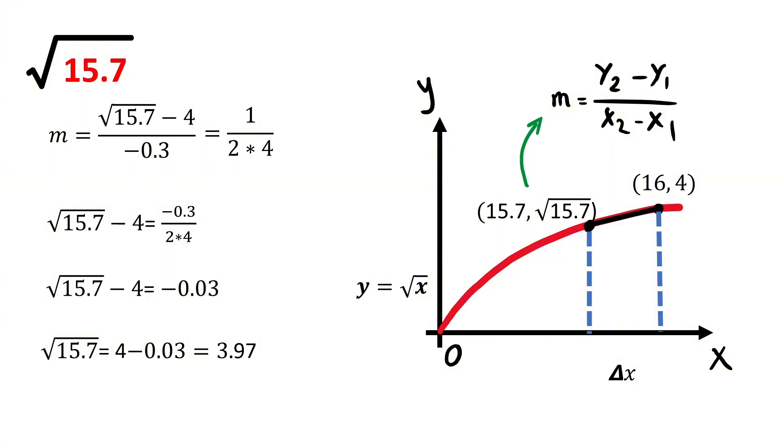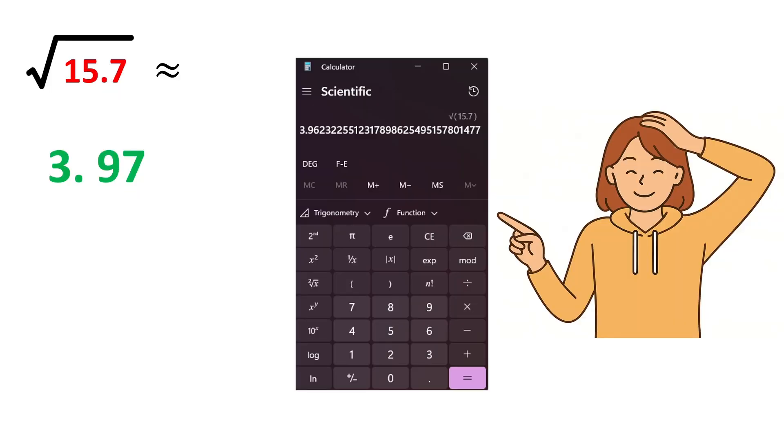And this 3.97 is the approximate value for the square root of 15.7. If we put square root of 15.7 on a calculator, we get 3.96, which is very close to our approximation.